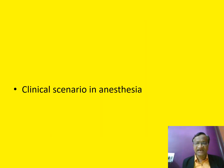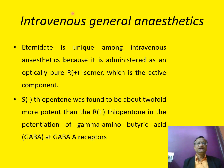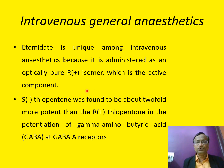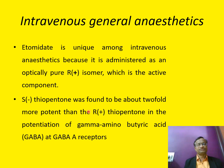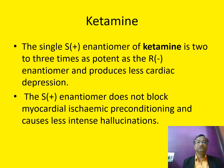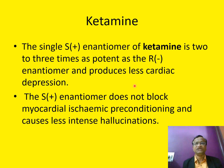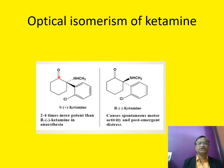In clinical anesthesia scenarios: intravenous etomidate is unique in that it is administered only as a pure R isomer. S-thiopentone was found to be twofold more potent but has not become a market success. S-ketamine is two to three times more potent, causes less cardiac depression, and produces less intense hallucinations — it is coming up while racemic ketamine use is declining.